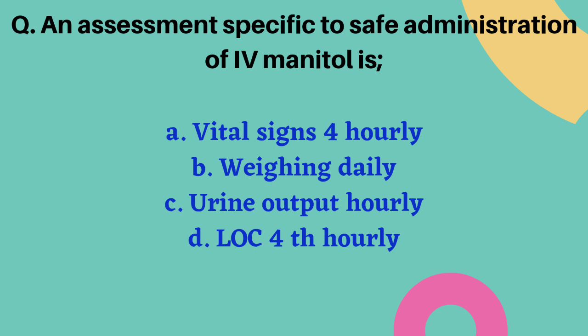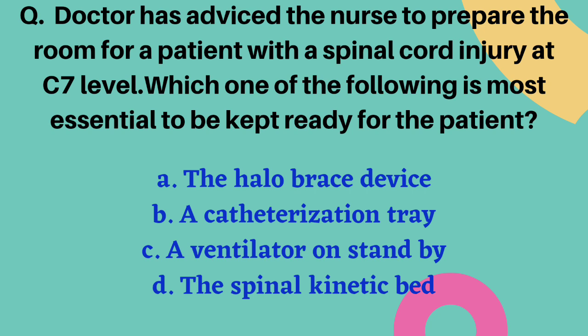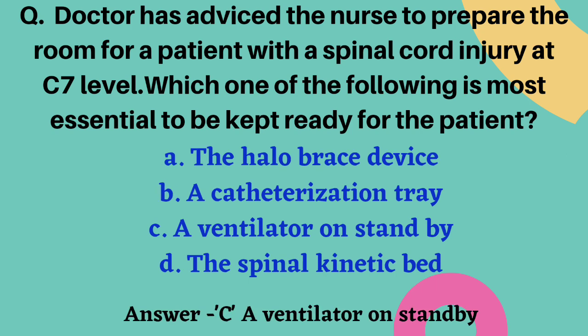An assessment specific to safe administration of IV mannitol: options are vital signs every four hours, weighing daily, urinary output hourly, and loss of consciousness checking every four hours. The correct answer is option C — urinary output hourly. Next: a doctor advises preparing a room for a patient with spinal cord injury at C7 level — which is most essential? Options include halo brace device, catheterization tray, ventilator on standby, and spinal kinetic bed. The correct answer is option C — ventilator on standby.